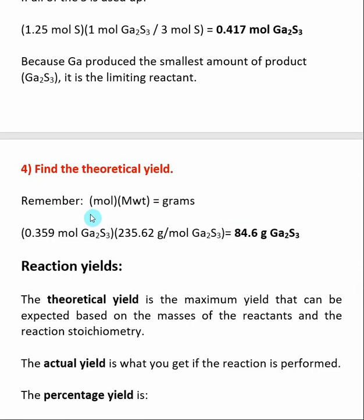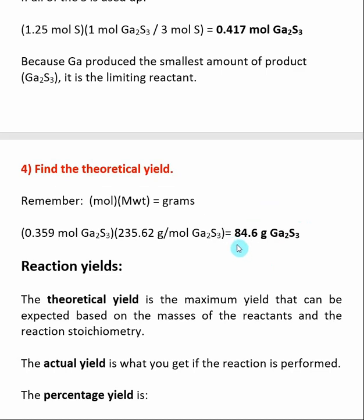We apply the fact that moles times molecular weight gives grams. We know that this reaction makes 0.359 moles of gallium sulfide. Multiplying by the molecular weight of gallium sulfide tells us that the maximum amount of product we can make is 84.6 grams of gallium sulfide — this is our theoretical yield. This means that if the reaction works perfectly and all of the limiting reactant is converted to product, this is the maximum amount of gallium sulfide we can make.